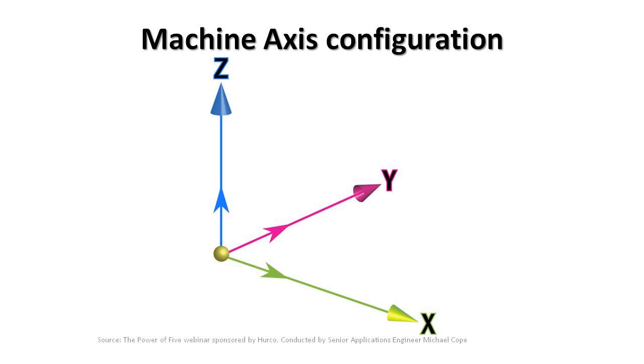Where we see the inaccuracies is when they start talking about the rotary axis associated with a 5-axis machine. This is also a very simple concept.